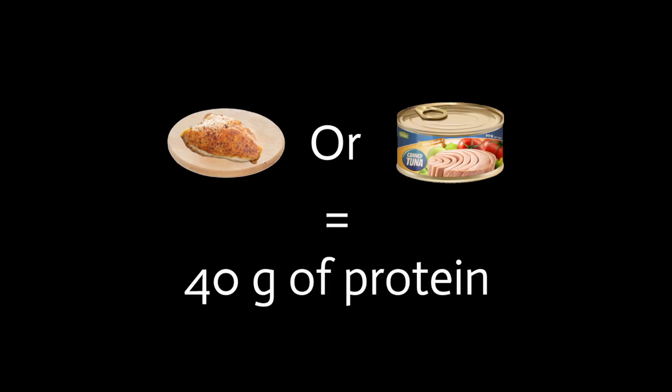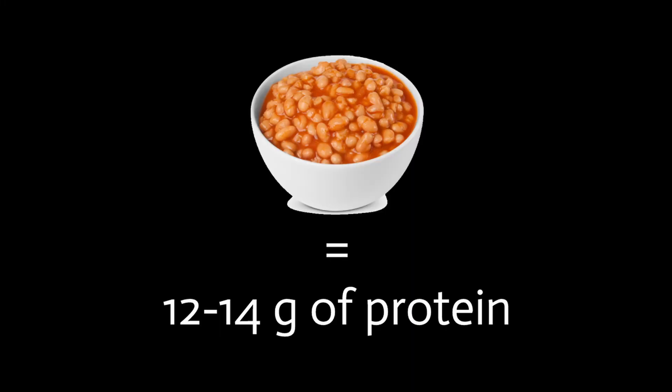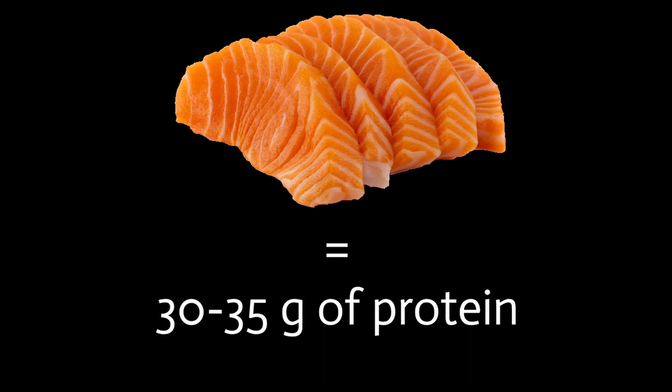For instance, one chicken breast or one can of tuna has about 40 grams of protein. One scoop of protein powder has about 30 grams. Something like a cup of beans has between 12 and 14 grams. Something like salmon might have about 30, 35 grams. So these are all examples of sources of protein.